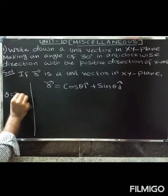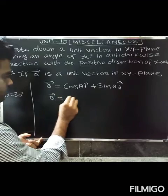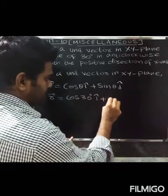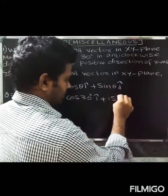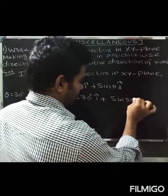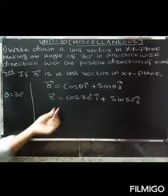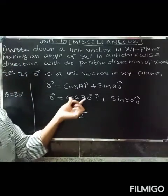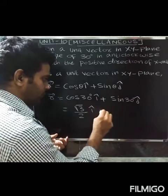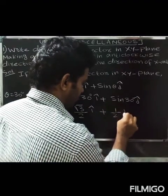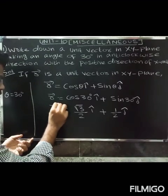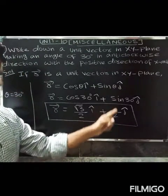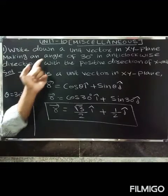So theta equals 30 degrees. Therefore r vector equals cos(30°) î plus sin(30°) ĵ. The value of cos 30° is √3/2, and sin 30° is 1/2. So r vector equals (√3/2) î plus (1/2) ĵ.